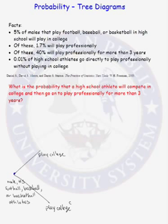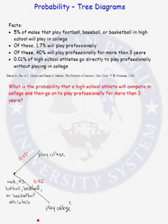What is the probability that a male athlete will play in college? We see that probability is 5%. If the probability that they do play in college is 5%, then the probability that they don't play in college is 1 minus 5%, or 95%.